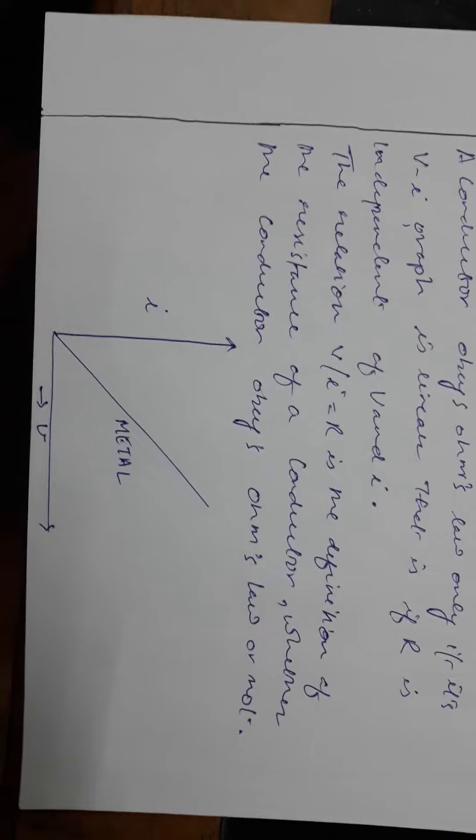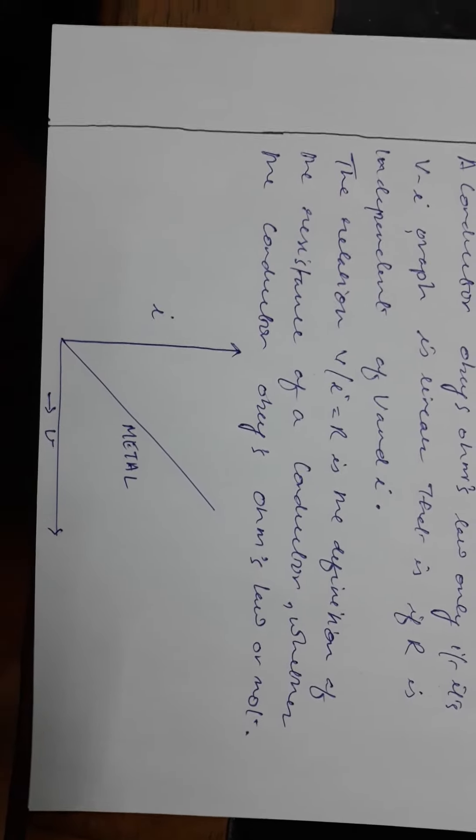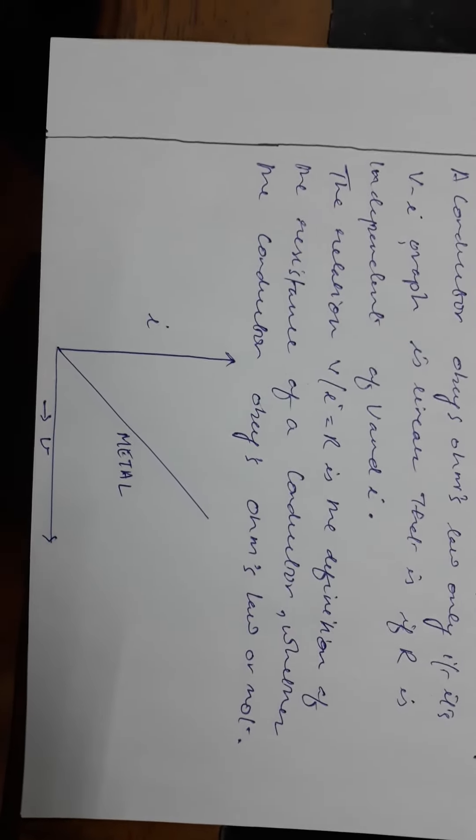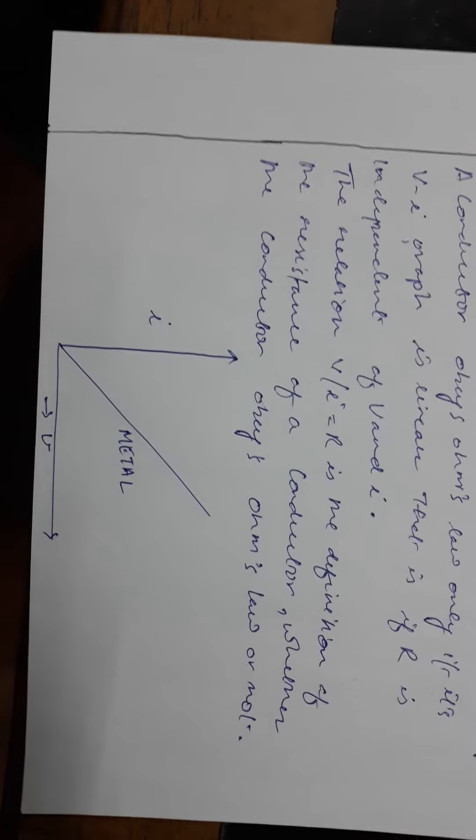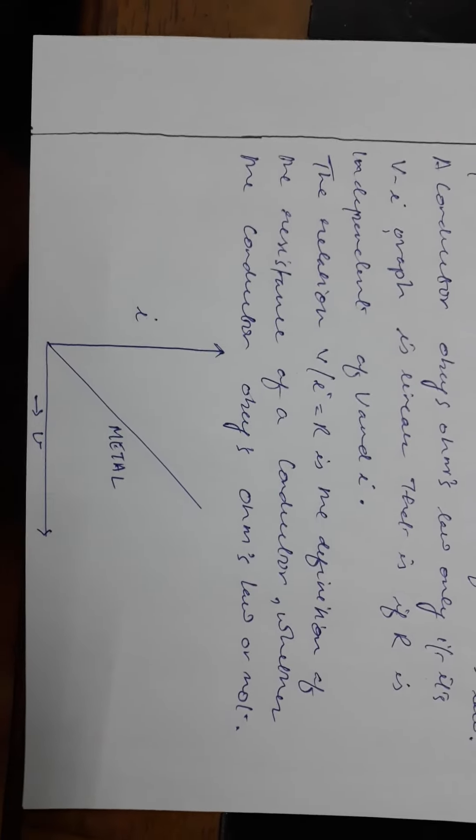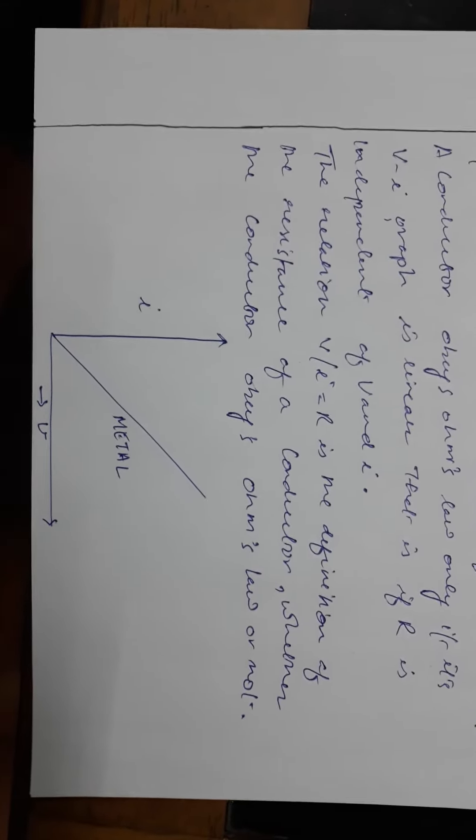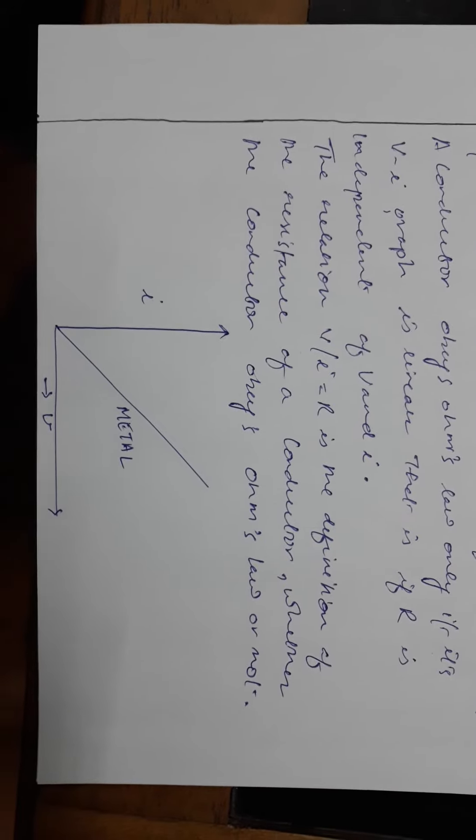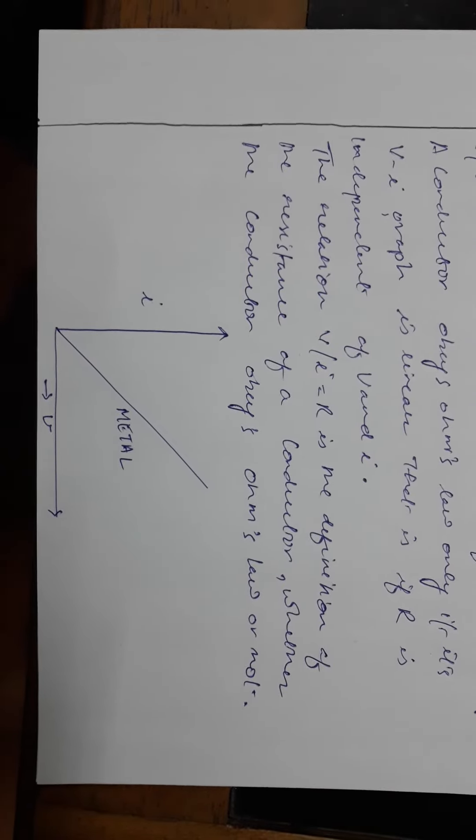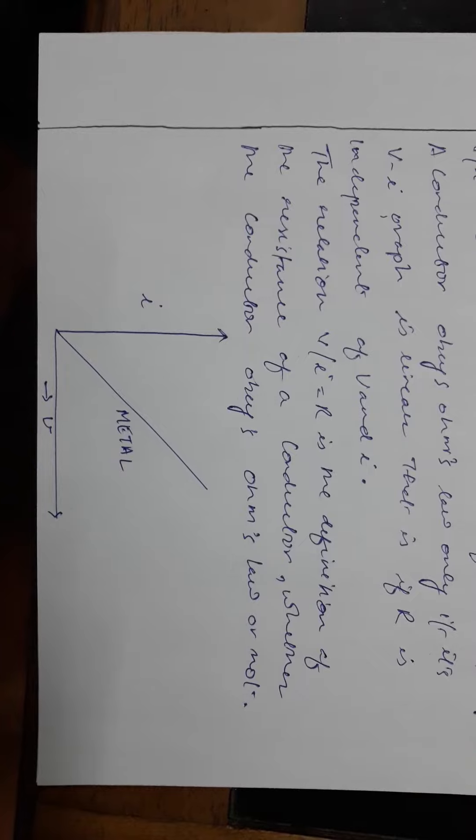This graph shows that the current and potential difference increases proportionally. Voltage is equal to V and current is proportional to voltage.